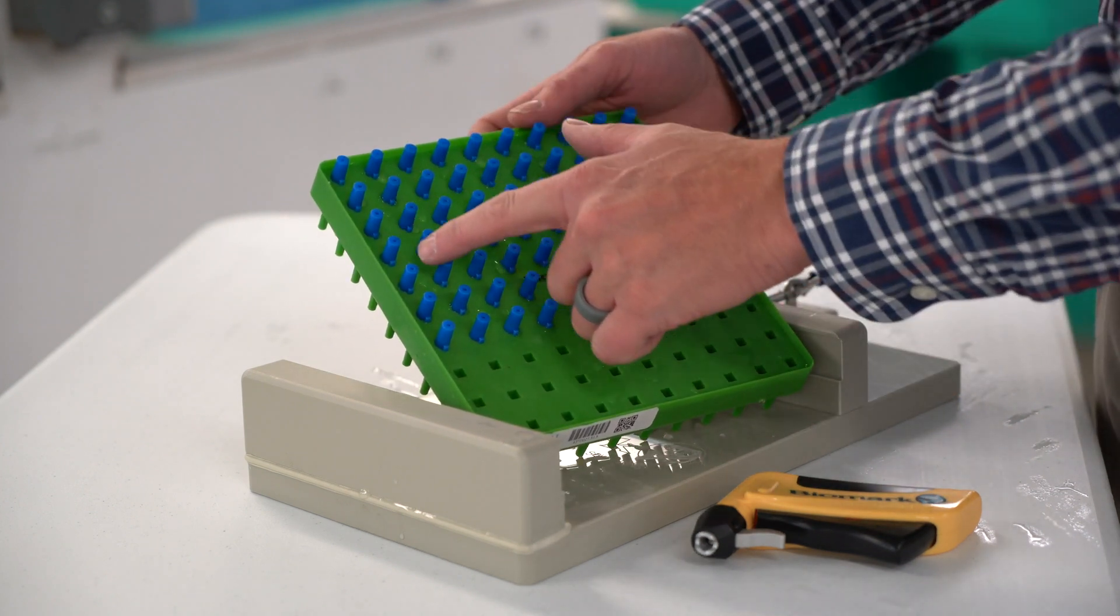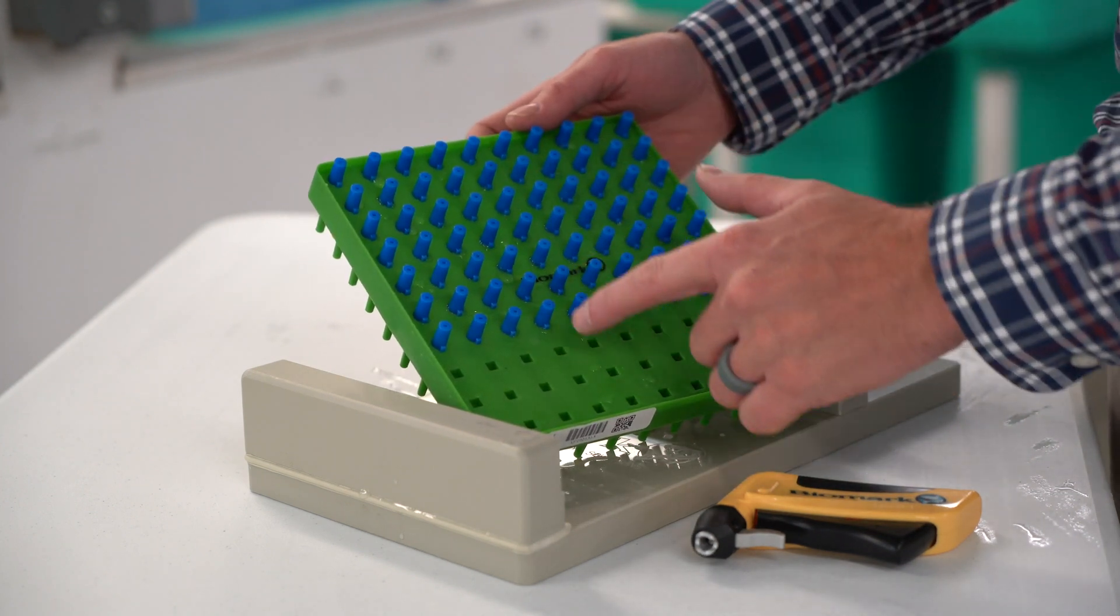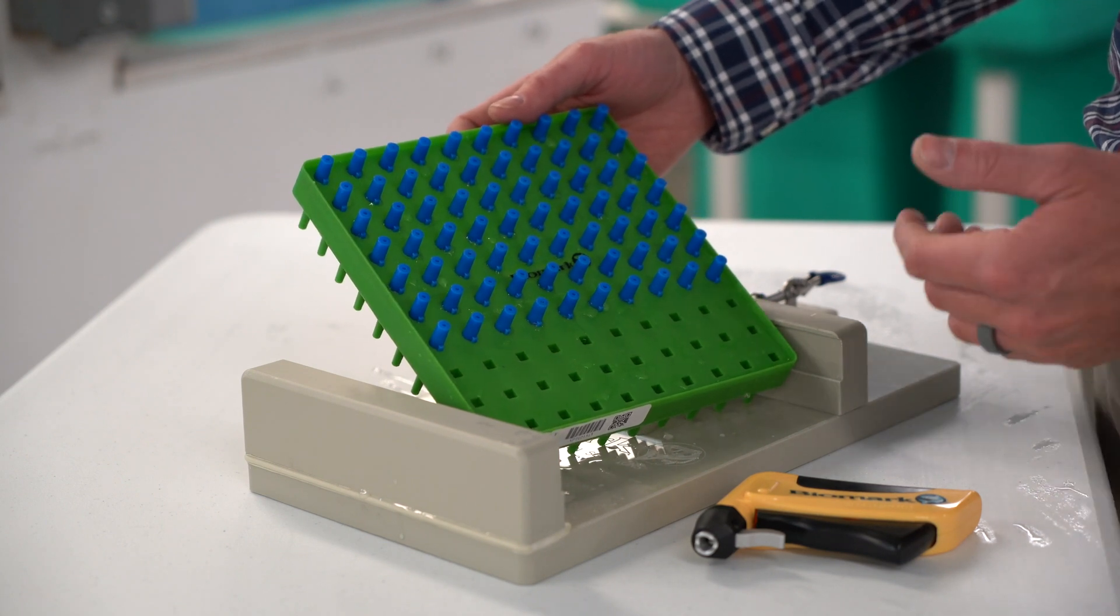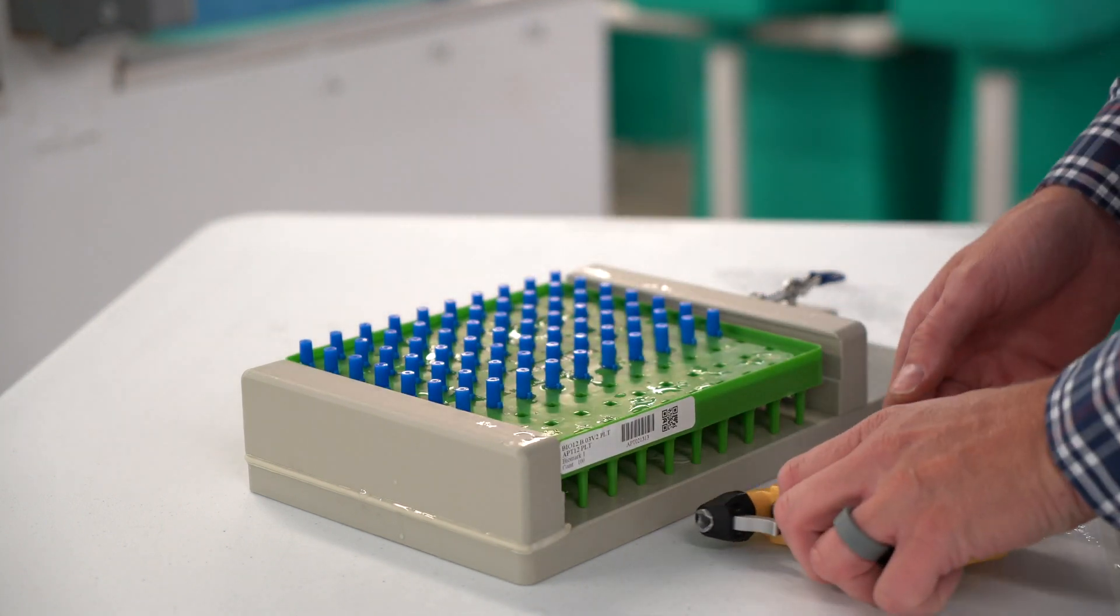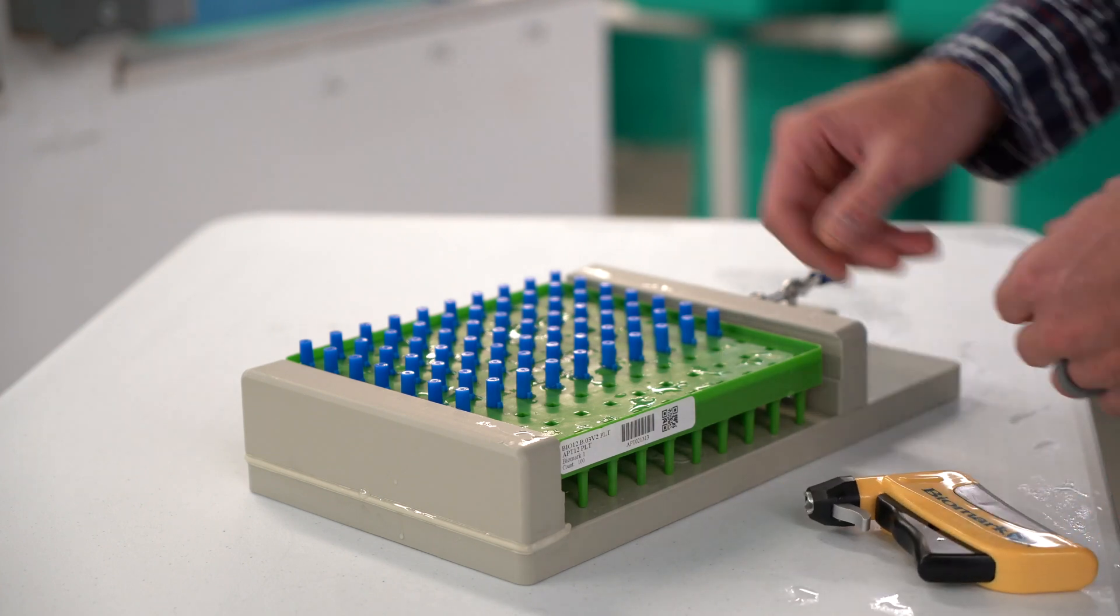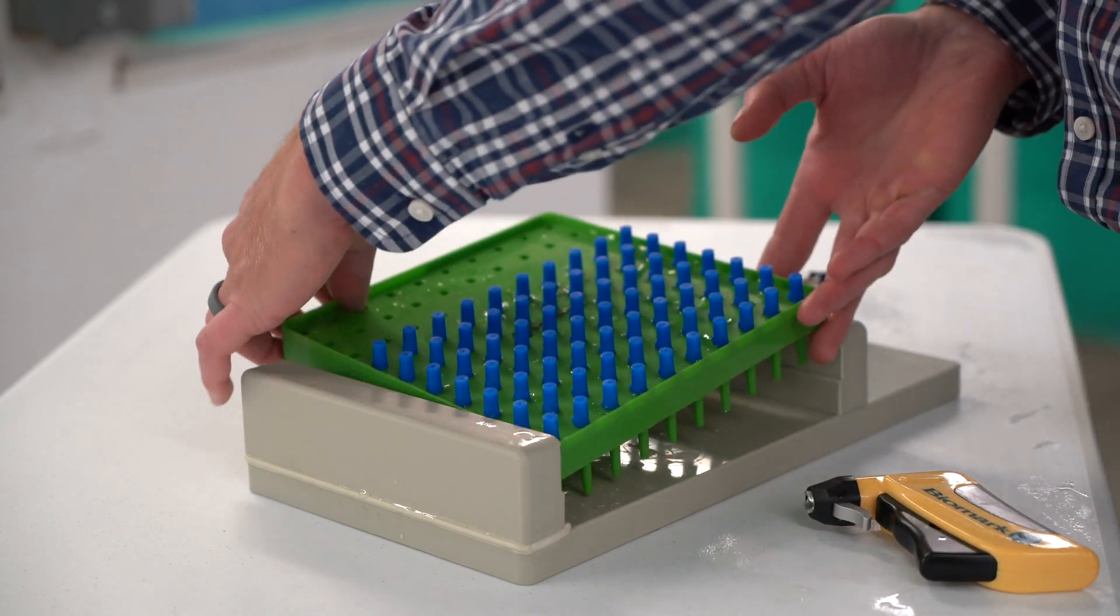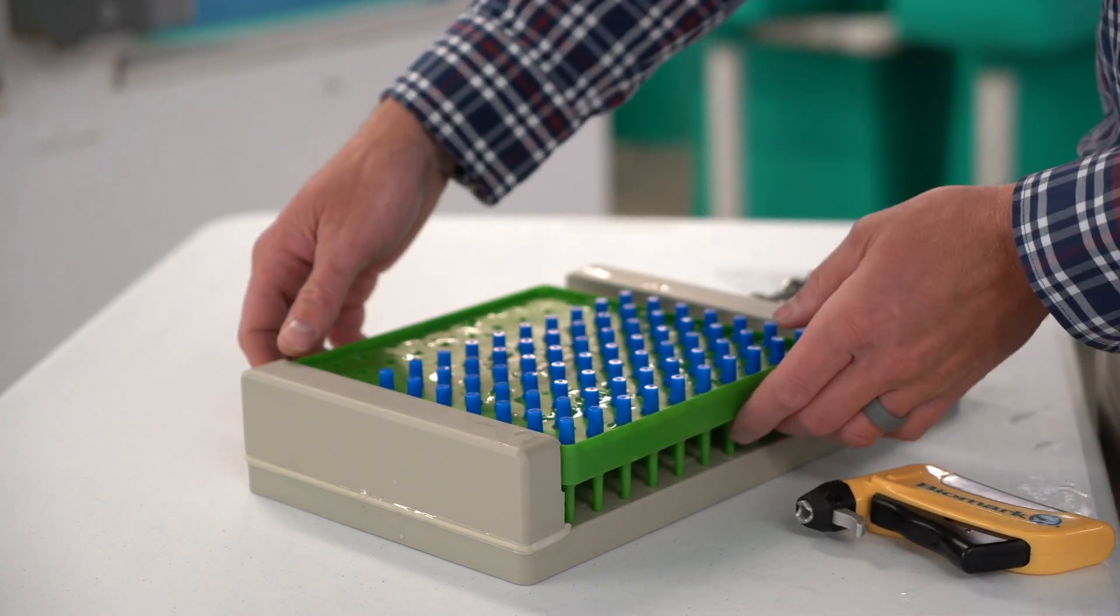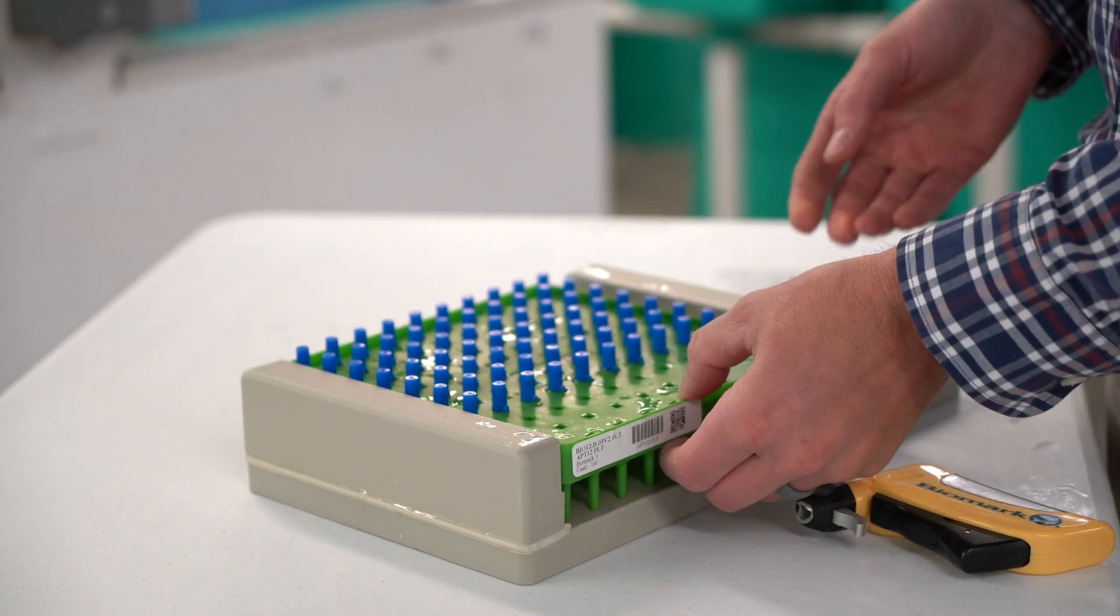Each tray is designed to accommodate left-handed and right-handed taggers. Note each needle has a small tab. All tabs are aligned in the same orientation. For right-handed users, the tabs should be facing the tagger. For left-handed users, the tray can be rotated 180 degrees, and the tabs should face away from the tagger.